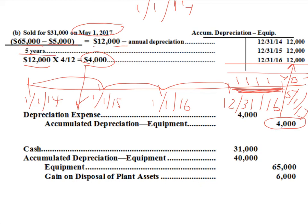For the sale journal entry, start by crediting Equipment for the full cost, then debit Accumulated Depreciation for the full amount up to the date of sale — $40,000. That gives a book value of $25,000. Next, record cash proceeds of $31,000. Since the book value was $25,000 and we sold it for $31,000, we have a gain on disposal of $6,000 — a wonderful situation.